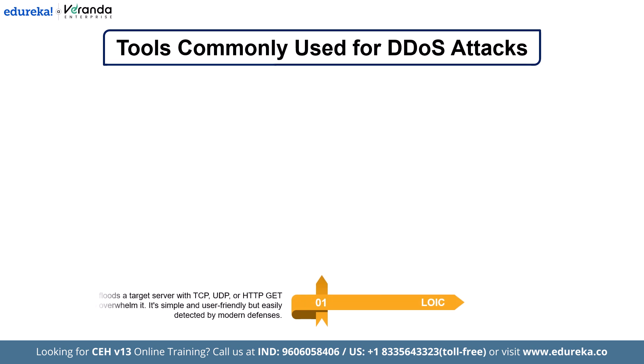First on the list is LOIC, which stands for Low Orbit Ion Cannon. LOIC is one of the most basic tools used to launch DDoS attacks. It works by directing a flood of traffic from one or more computers to a specific server or website in an attempt to overwhelm it. It can send different types of packets such as TCP, UDP, and HTTP GET used in HTTP flood attacks. LOIC became popular because it's easy to use with a simple interface, but it's not very stealthy and can be detected quickly by modern defenses.